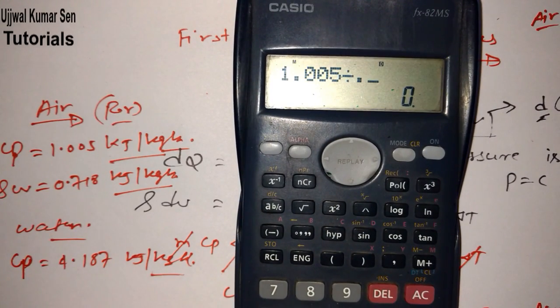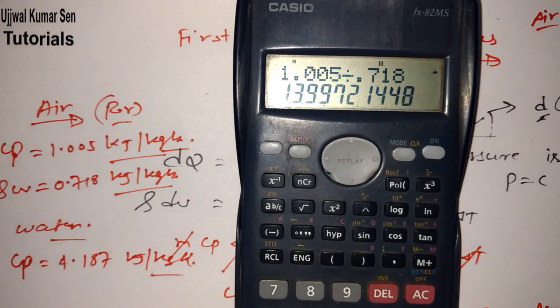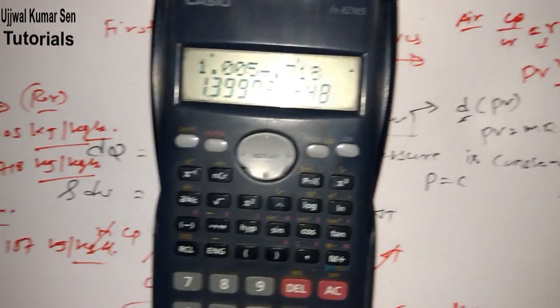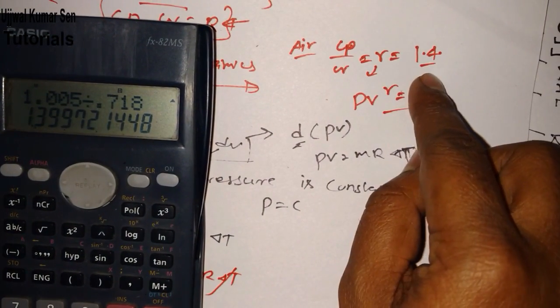So what you got? 1.3999. That's why we consider as 1.4. That is specific heat ratio for air is 1.4.